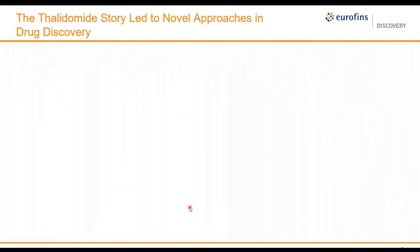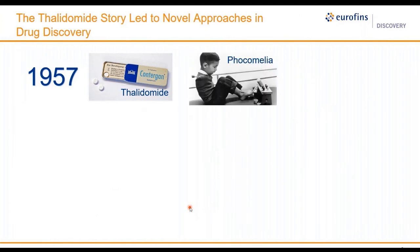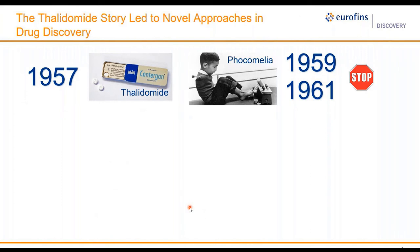I want to explain where the idea for the E3 scan platform came from. I'm sure some of you are familiar with the story of thalidomide. Thalidomide was first marketed in 1957 in West Germany under the trade name Conturgan, primarily prescribed to treat nausea and morning sickness in pregnant women. However, shortly after the drug was sold, between 5,000 and 7,000 infants were born with phocomelia, which is malformation of the limbs. Only 40% of these children survived. Throughout the world, there were about 10,000 cases reported, and finally in 1959 thalidomide ceased to be provided over the counter, and by the end of 1961 it was completely taken off the market.